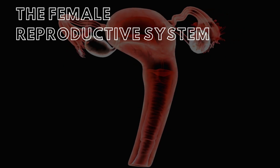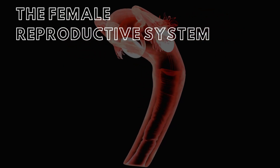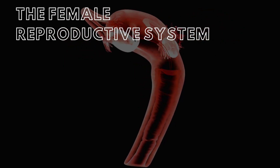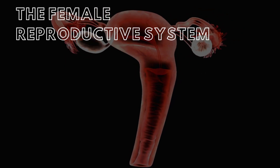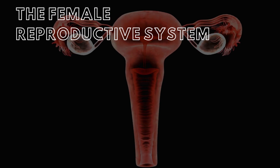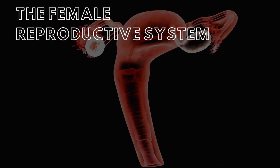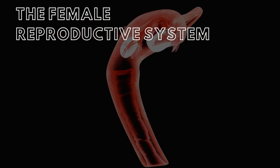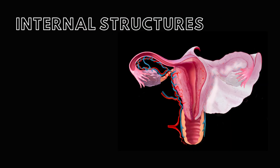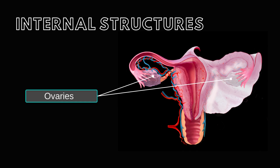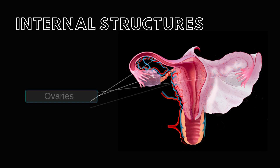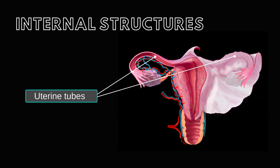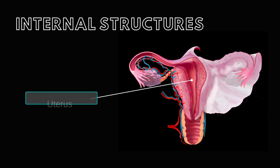The female reproductive system is composed of external genitalia and internal pelvic structures. The internal pelvic structures are the ovaries, uterine or fallopian tubes, uterus, and the vagina.